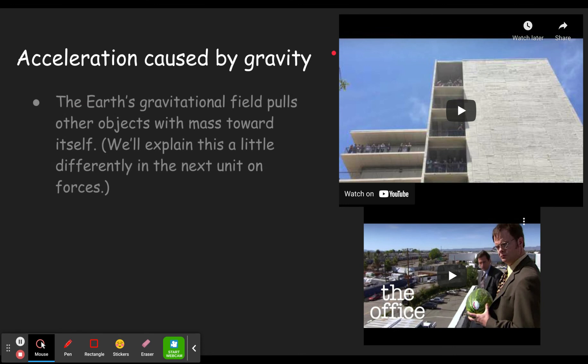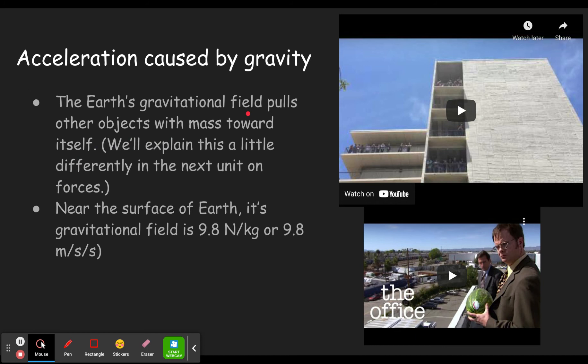So acceleration caused by gravity. The earth's gravitational field pulls other objects of mass towards itself. Later on we'll talk about how two things with mass actually attract each other. For right now we'll just talk about a gravitational field around the earth. That gravitational field is 9.8 newtons per kilogram when you're near the surface.